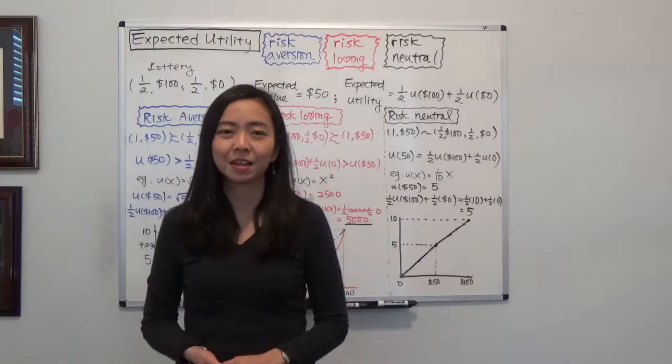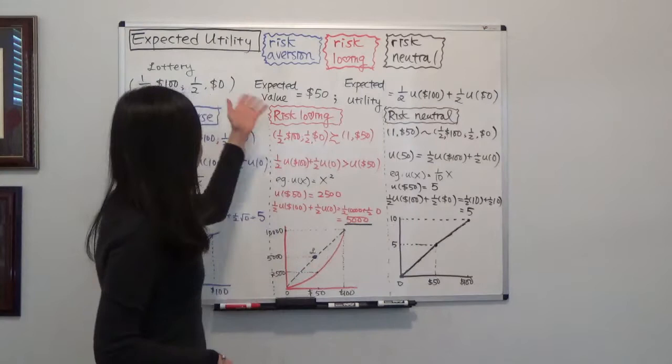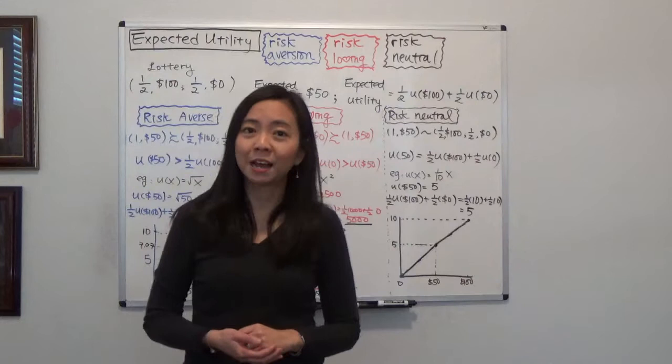Today we're going to talk about three kinds of risk preference: risk aversion, risk loving, and risk neutral.